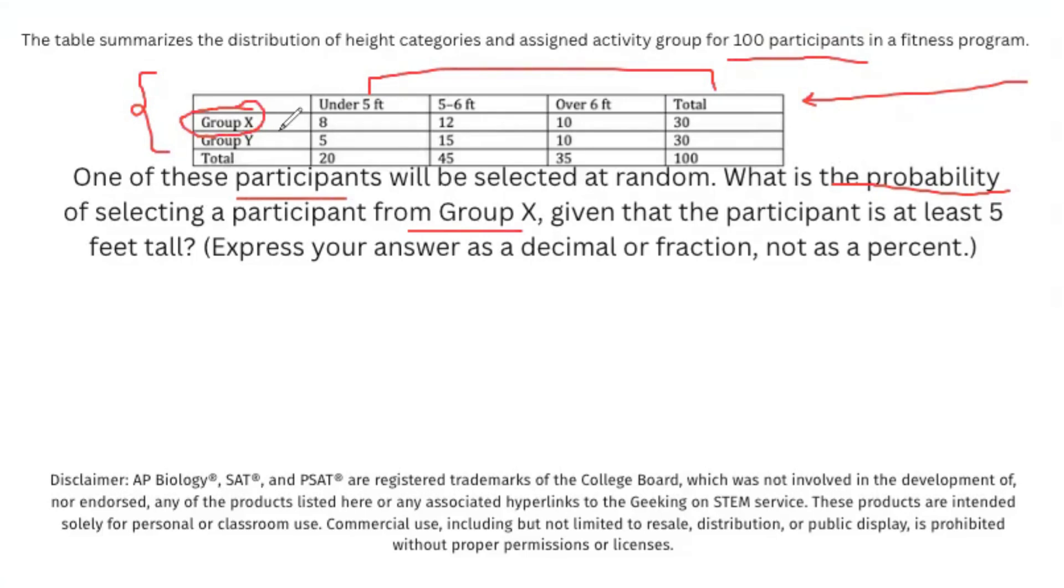We are given that the participant is at least 5 feet tall. Based on this, we're taking a look at everybody above 5 feet and not under 5 feet. So we're taking a look at the category of 5 to 6 feet or over 6 feet.